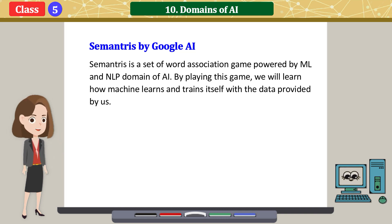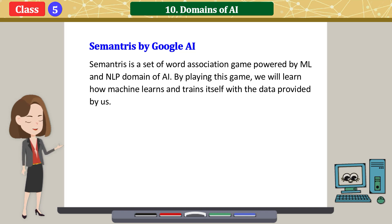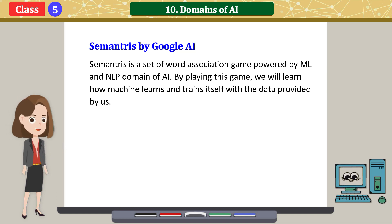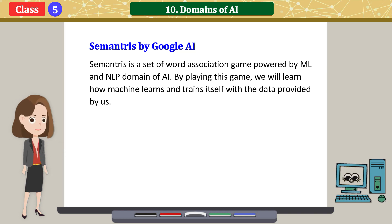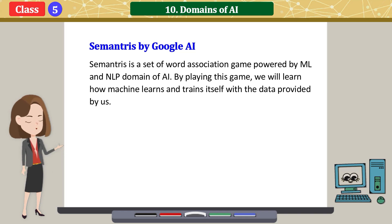In the AI Lab section, we look at Semantris by Google AI. Semantris is a set of word association games powered by ML and the NLP domain of AI. By playing this game, we will learn how a machine learns and trains itself with the data provided by us.